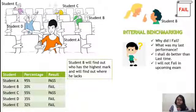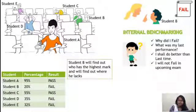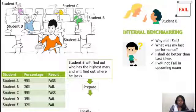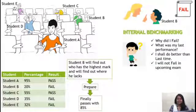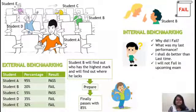He will see what notes A referred to, what is his way to study. He will keep this in mind, and next time he will prepare accordingly. Finally, he will make 85%. This is the success behind external benchmarking.